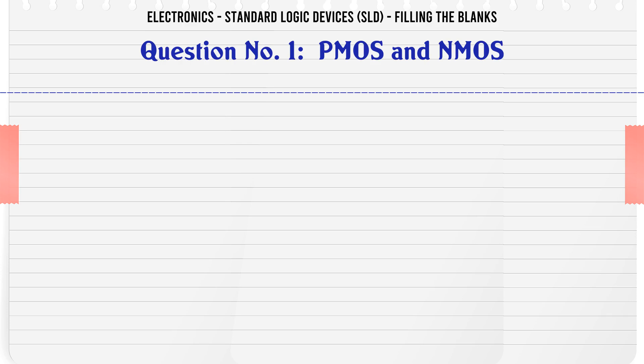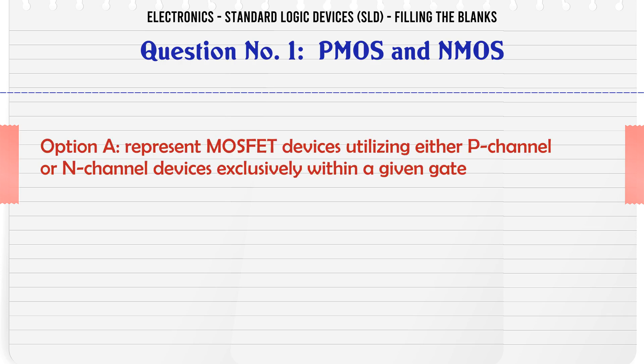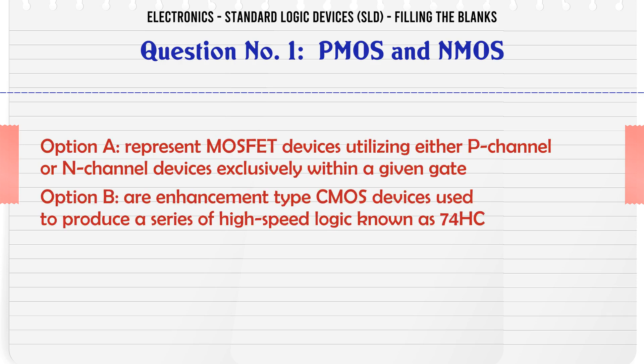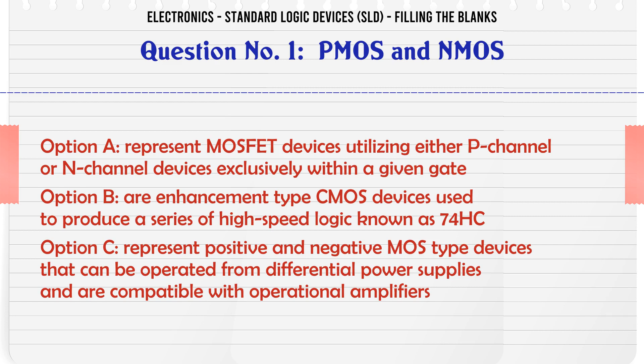CMOS and NMOS. A represent MOSFET devices utilizing either P-channel or N-channel devices exclusively within a given gate.